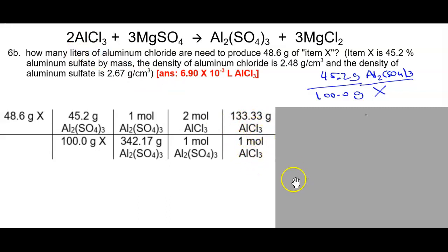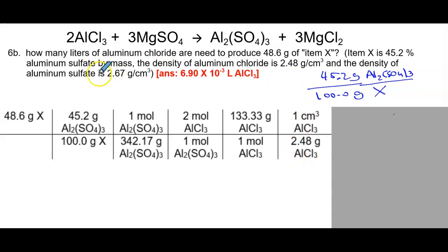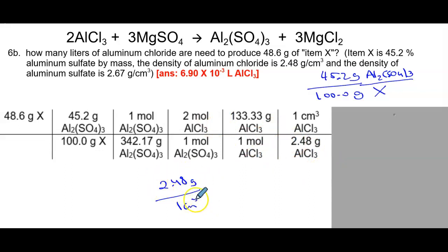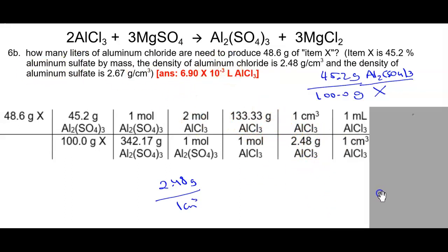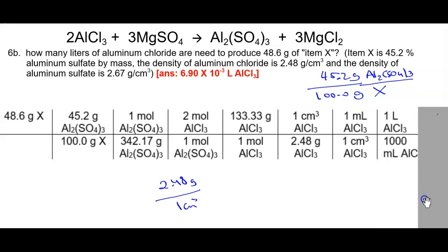The density of aluminum chloride is 2.48 grams per centimeter cubed — written as 2.48 grams over 1 centimeter cubed. We flip it to cancel units, keeping 2.48 grams with grams and 1 centimeter cubed together, just like the 12 inches to a foot relationship. Now we have centimeters cubed, but we need liters. We know there is 1 centimeter cubed per 1 milliliter, and 1,000 milliliters per liter. Once we do that, we get our answer with 3 sig figs.